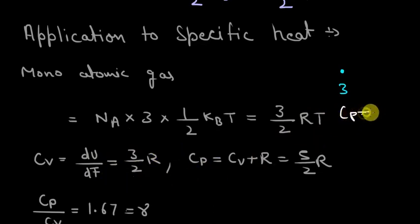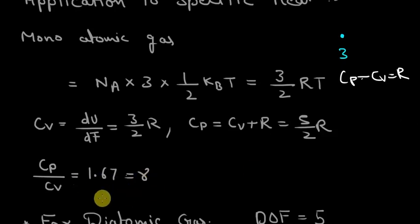And we also know that Cp minus Cv equal to R. So Cp will be Cv plus R and we just plug it in here we will get 5 by 2 R. Now if we divide Cp by Cv we will get 1.67 which is the adiabatic constant. So we can get this much information from this simple concept.